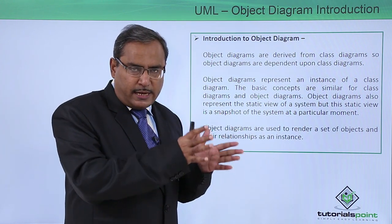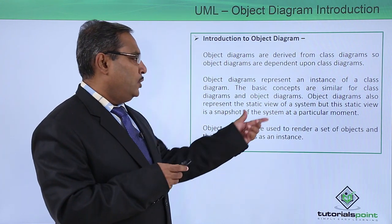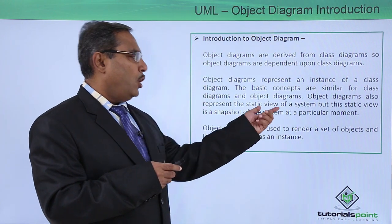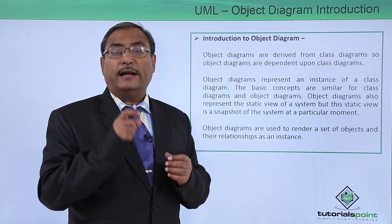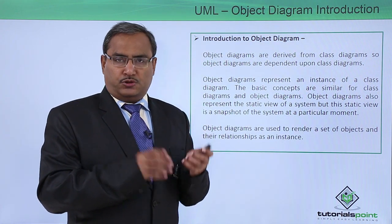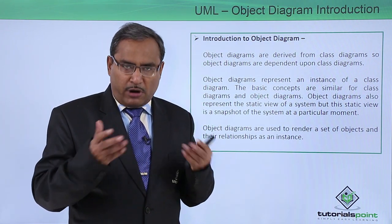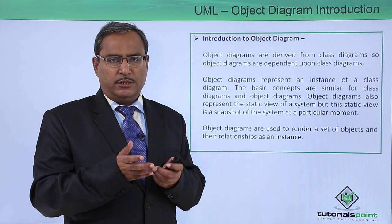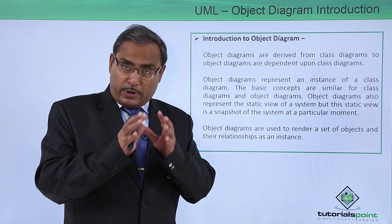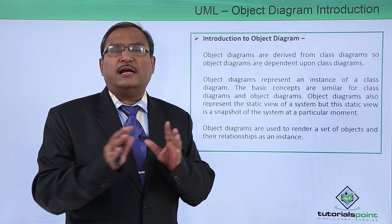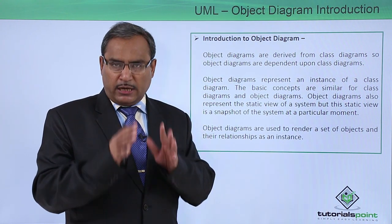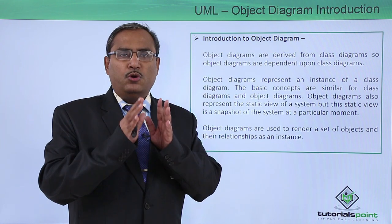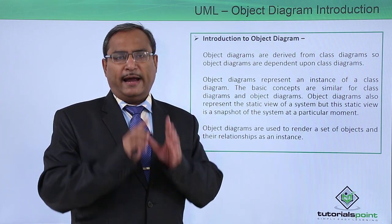Object diagrams also represent the static view of the system, but this static view is a snapshot of the system at a particular moment or instant of time. Whenever an application is running, several objects under the classes will be created inside the computer's primary memory. When drawing one object diagram, that represents one instance of the application execution. We are considering only those objects which are available at that instant of time.